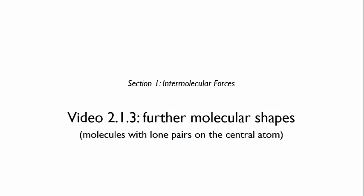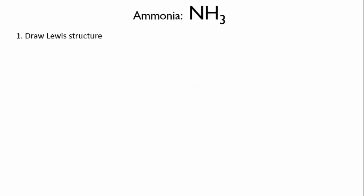In the last video, I introduced you to three basic molecular shapes predicted by VSEPR theory: linear, trigonal planar, and tetrahedral shapes. In this video, we're going to look at some variations on those shapes. So let's start with ammonia. First, pause the video and draw the Lewis structure.